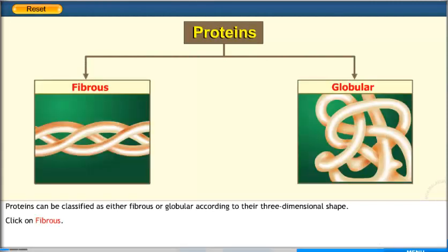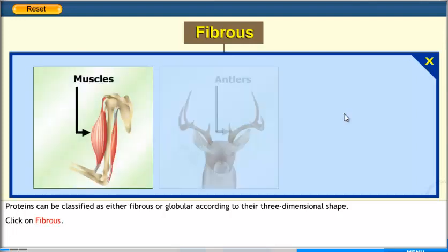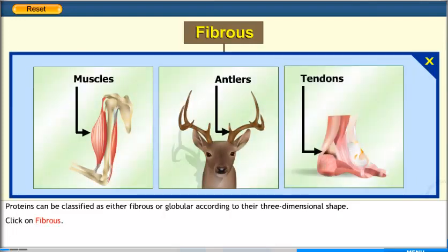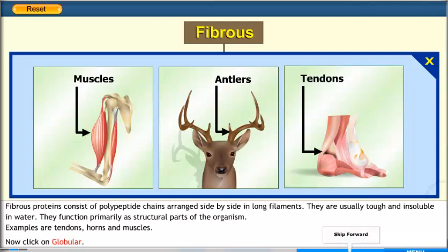Proteins can be classified as either fibrous or globular according to their three-dimensional shape. Fibrous proteins consist of polypeptide chains arranged side by side in long filaments. They are usually tough and insoluble in water. They function primarily as structural parts of the organism. Examples are tendons, horns, and muscles.